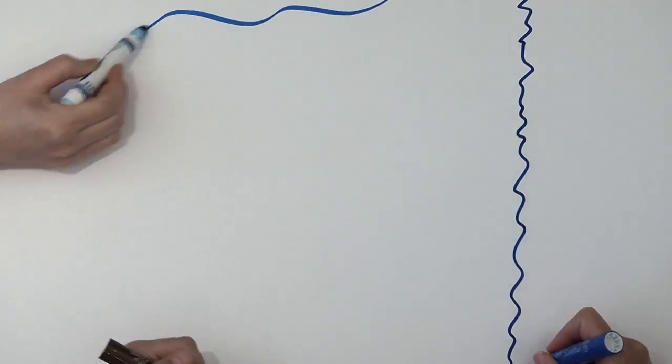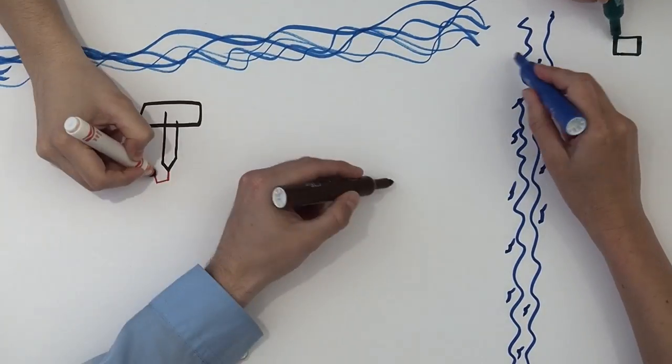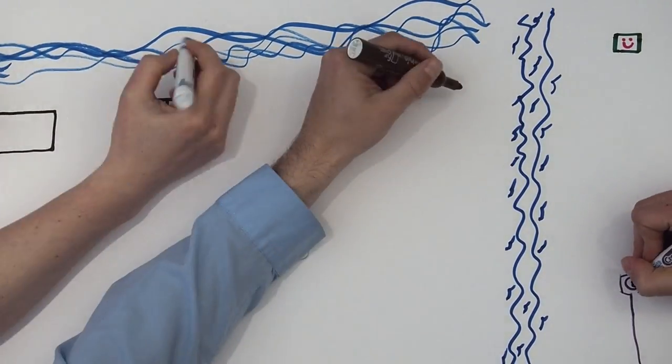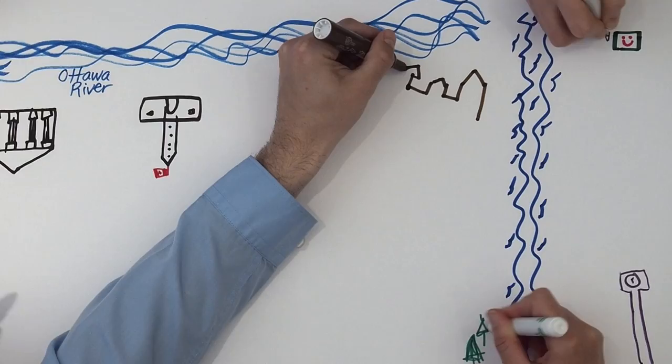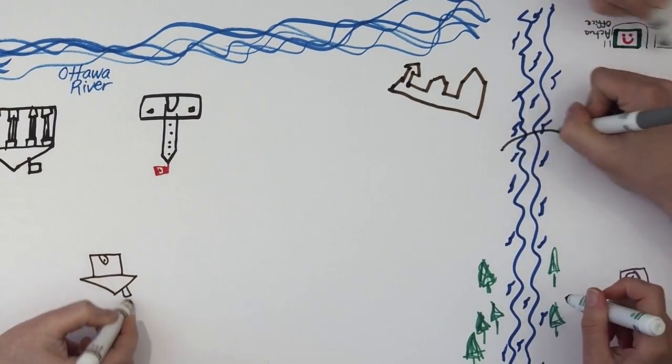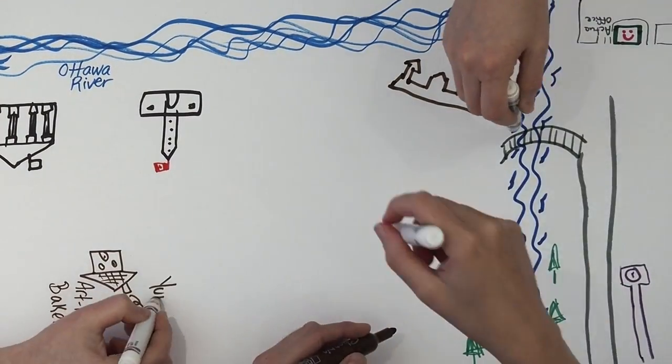Once all observations are collected, students return to share the knowledge they gathered and collaborate to create a map of their community that can be displayed on the wall of the camp space. This map can include all of the questions and STEM connections that youth observed and wonder about.